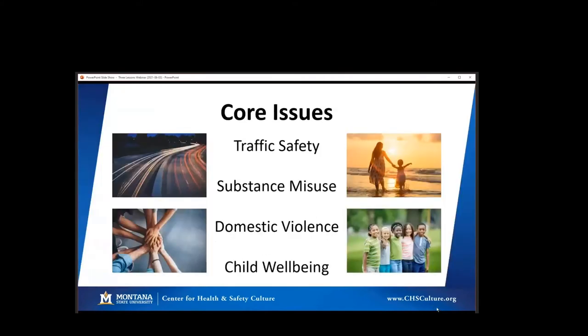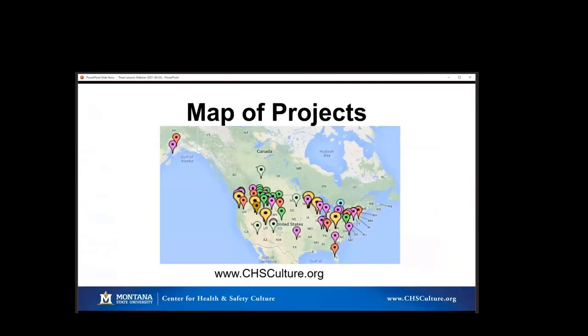We work on a variety of issues. Today we're going to be focusing on traffic safety, but we also work in other domains. It's interesting to see how these other domains address health and safety, how they're similar, and how they're different. Often at the community level, when you start working with coalitions, they may work on multiple health-related issues, so the coalitions may overlap. This is a quick map of our projects — although we're located at Montana State University, we do work all over the country. I'm actually a remote employee, talking to you from Maryland. Our staff are across the country, and we've done a couple of projects in Canada as well.